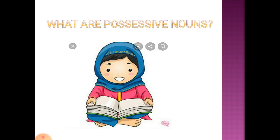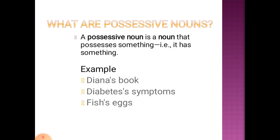In this picture, a girl is having a book in her hand and reading. It means the girl's book. They show a relationship or belonging between one person, place, animal, or thing. A possessive noun is a noun that possesses something — that is, it has something.